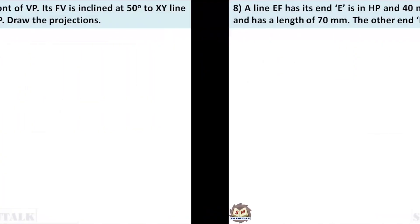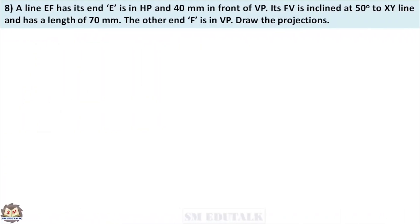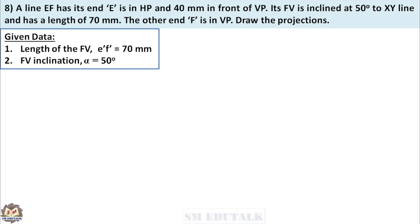Next, we will see problem number 8. A line EF has its end E in HP and 40mm in front of VP. Its front view is inclined at 50 degrees to the XY line and has a length of 70mm. The other end F is in VP. Draw the projections. In the problem, the positions of both endpoints, front view length 70mm, and its inclination of 50 degrees are given. Let us see how to draw the projections of line EF with this data.